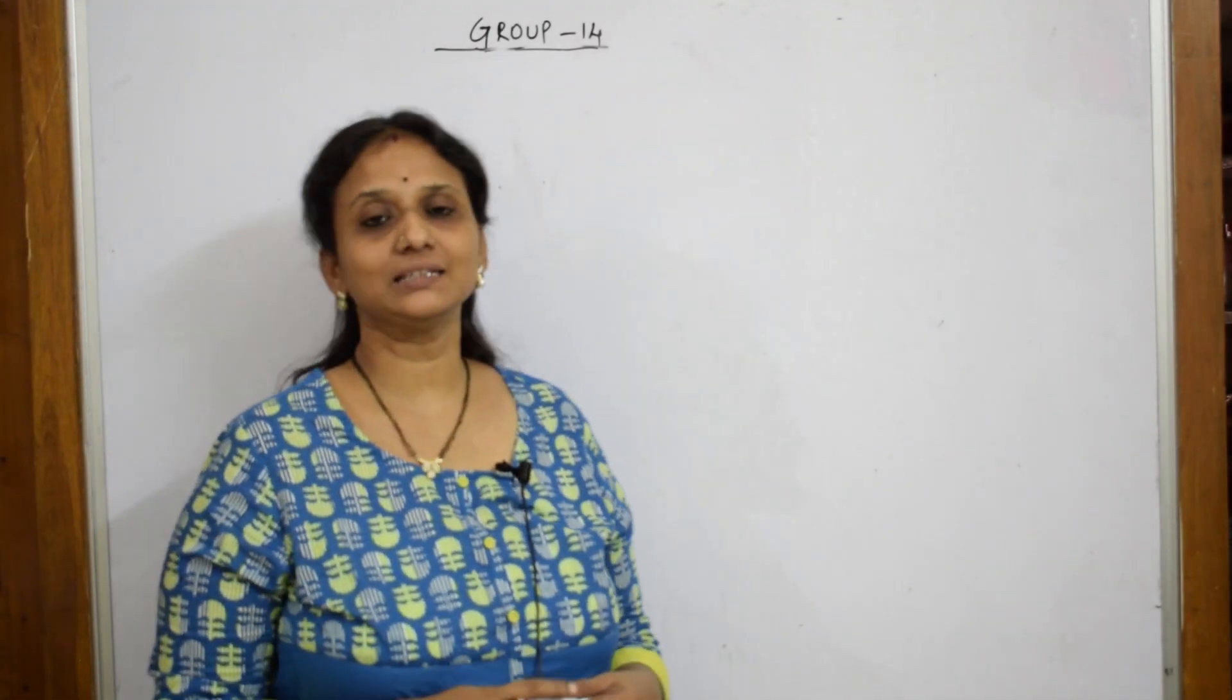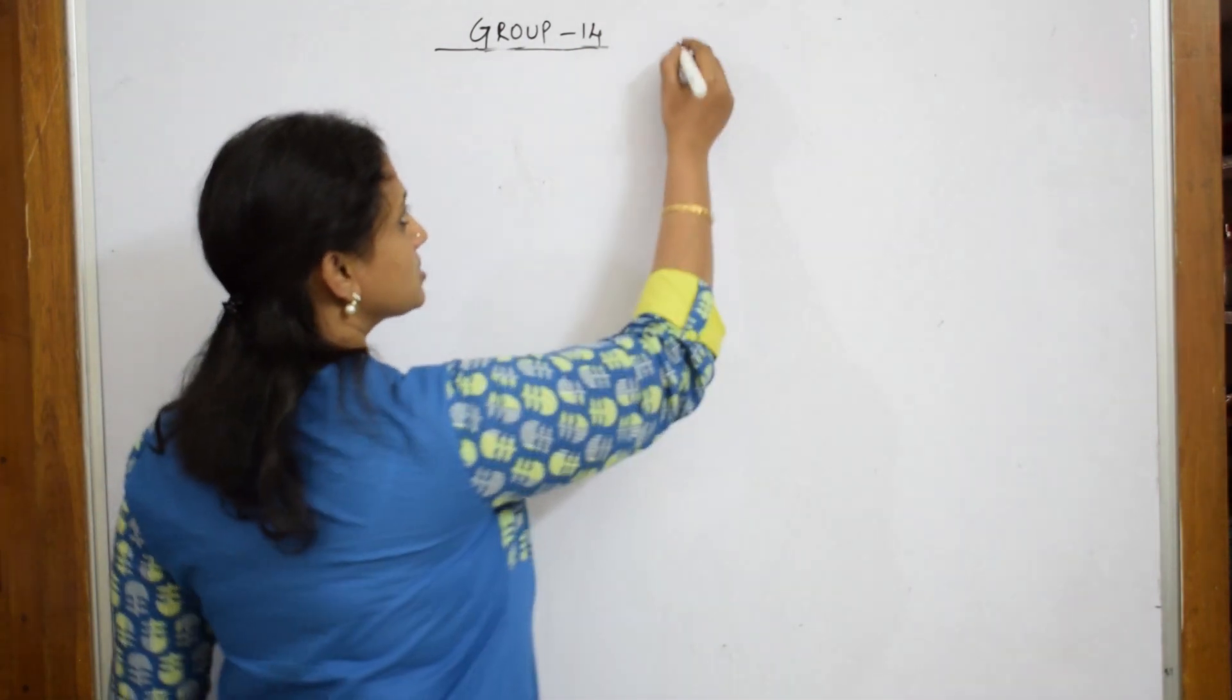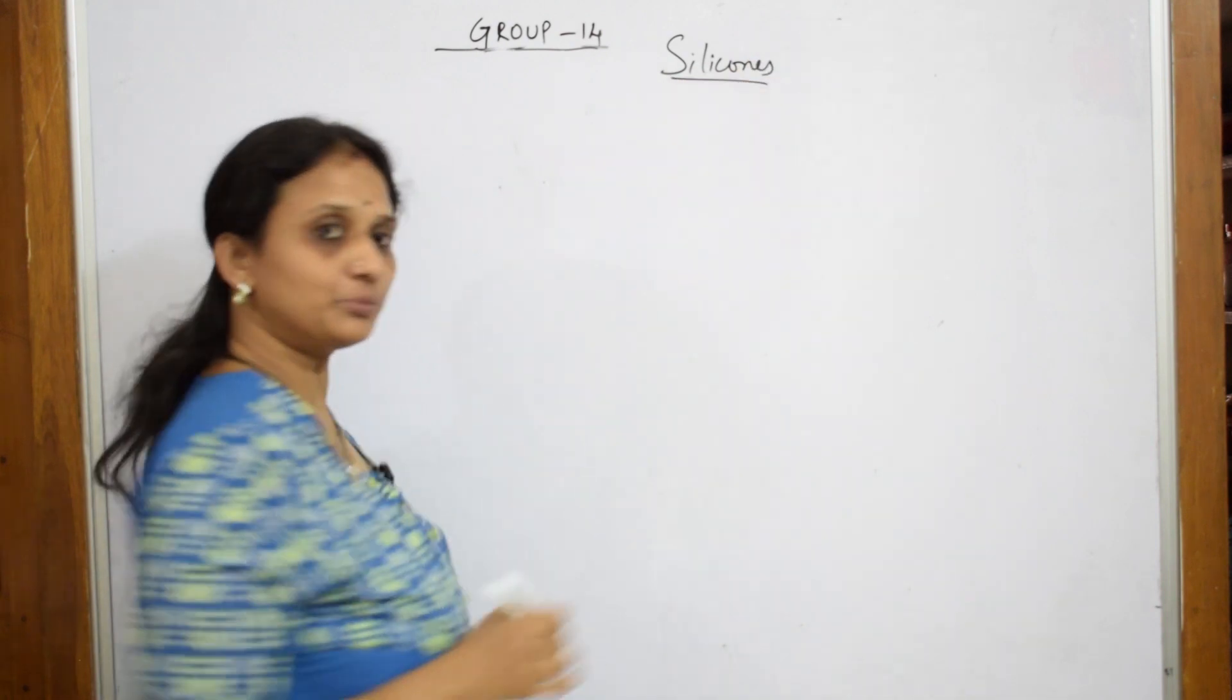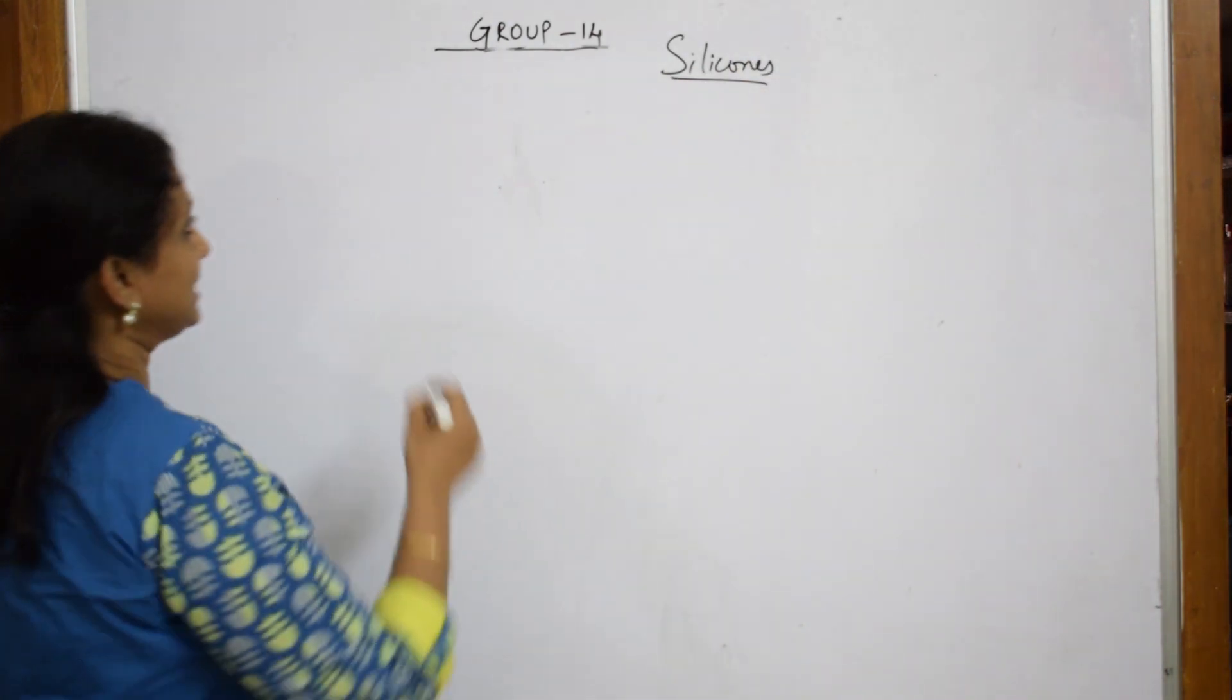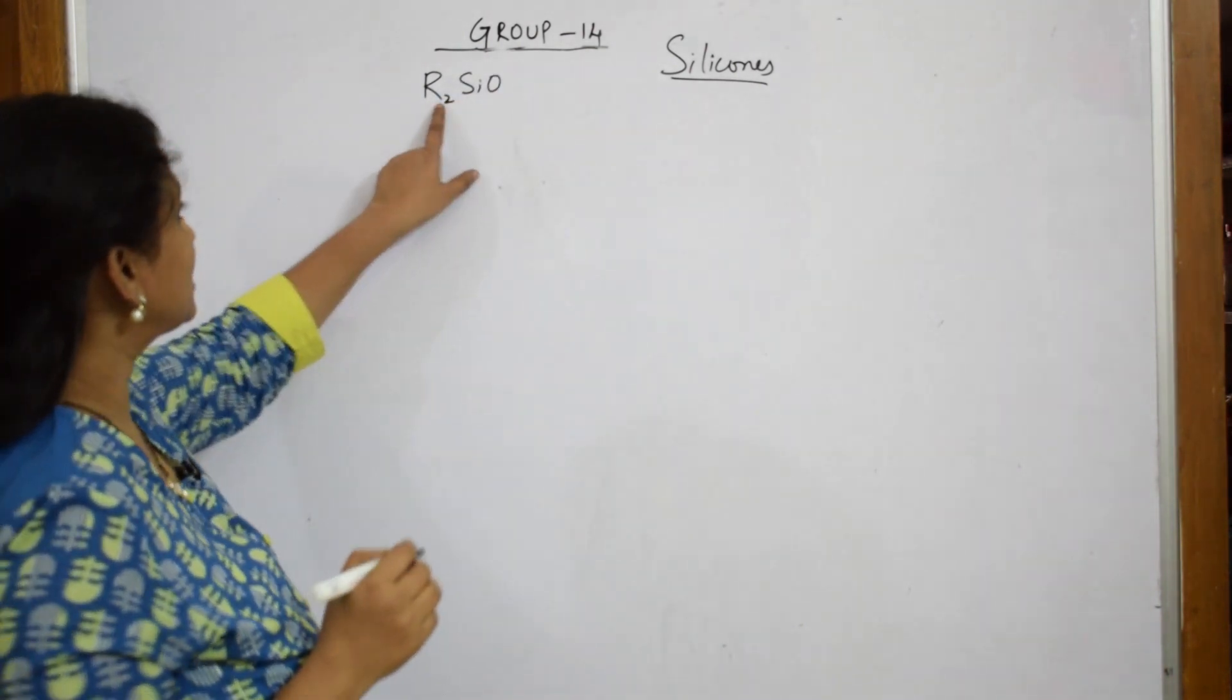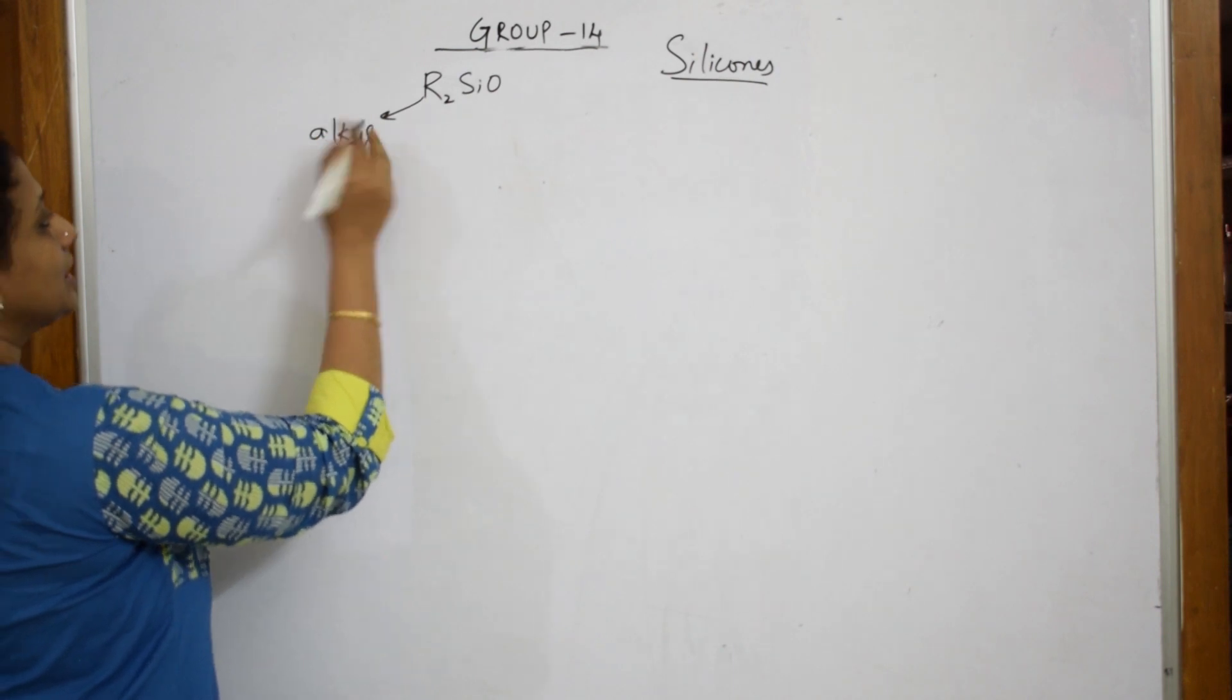So, let us now come back and learn one more topic of silica, that is silicones. So, the general formula for representation of silicones is R2SiO. What is this R? This R is called an alkyl group.